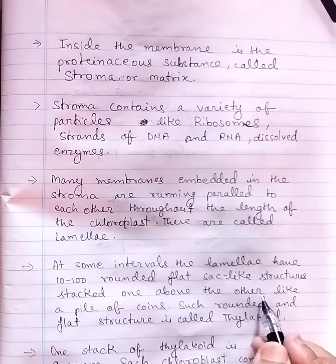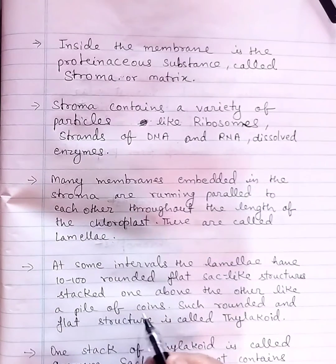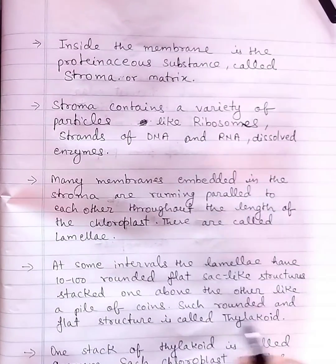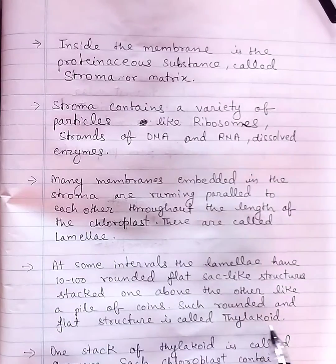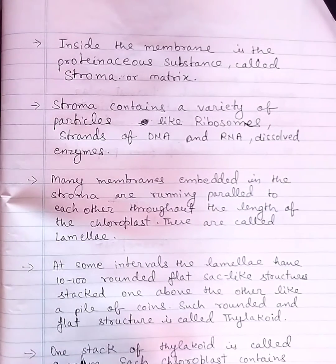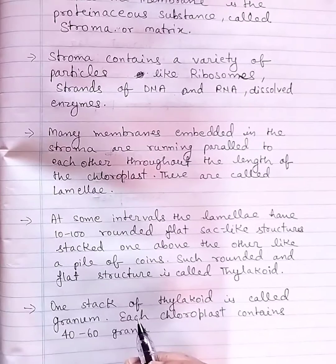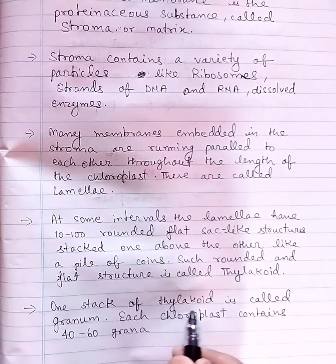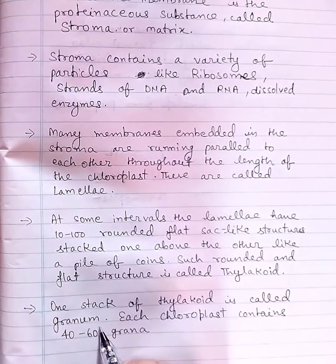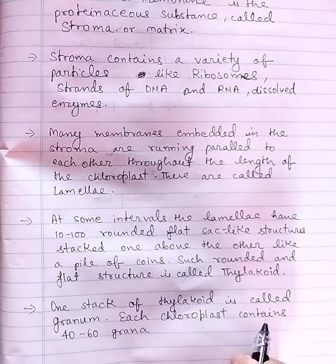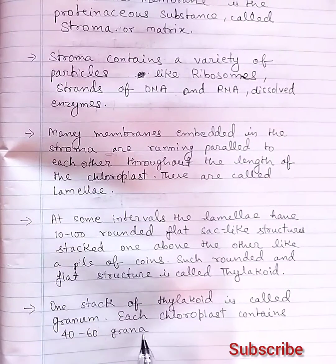Such rounded and flat structure is called thylakoid. One stack of thylakoids is called granum. Each chloroplast contains 40 to 60 grana.